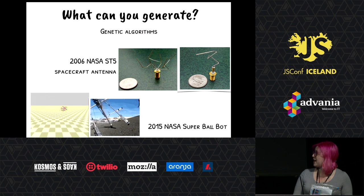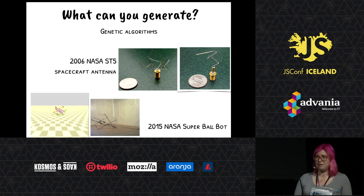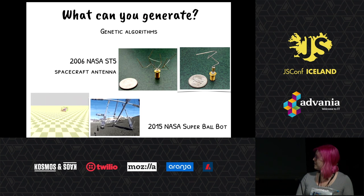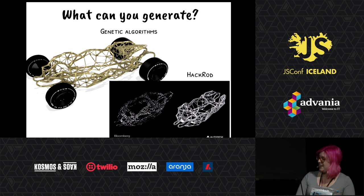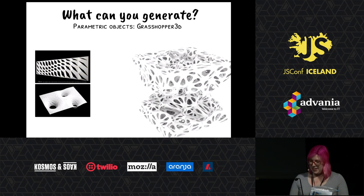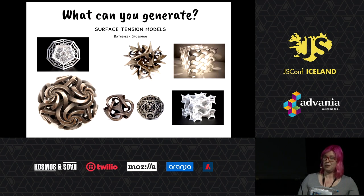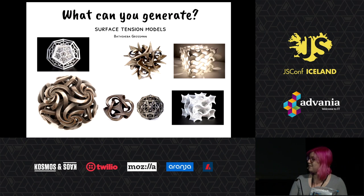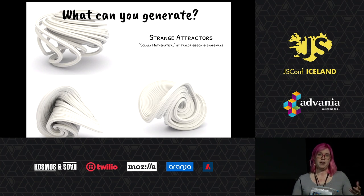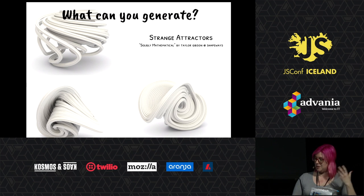They used that same method to figure out how to make a tensegrity ball walk. This is something that no human could program — the ball that wobbled the best got to have many babies, and eventually you get something that sort of lurches. Here is a hot rod that is procedurally generated; the chassis is something that no human would design, but a machine could. There are tools like Grasshopper 3D that make interesting parametric models. There's a woman named Bathsheba Grossman who does mathematical 3D generated models that are 3D printed out, sometimes quite large as art pieces. You can generate things with particles — these are strange attractors, imaginary swarms of particles orbiting in a strange way around some sort of gravitational body, and you can map their trails onto 3D geometry and print those out.